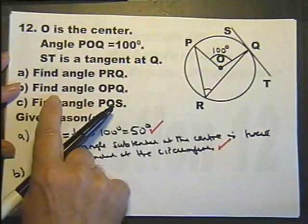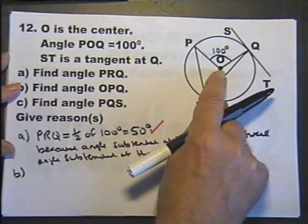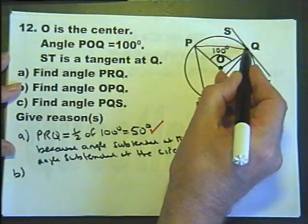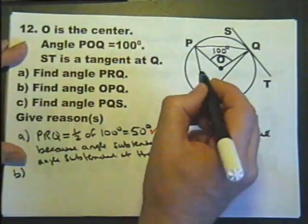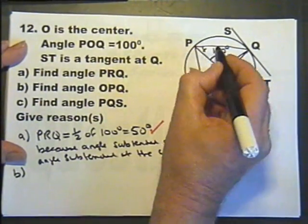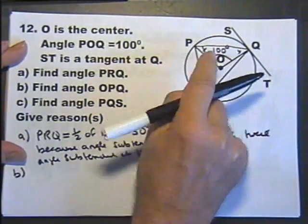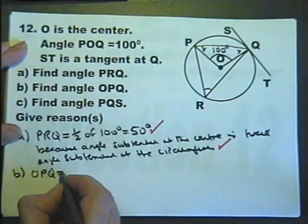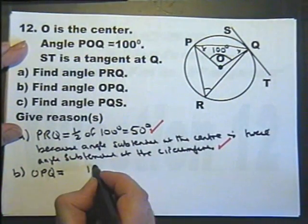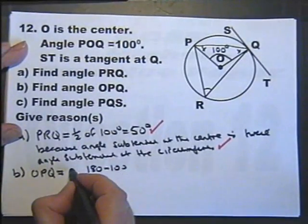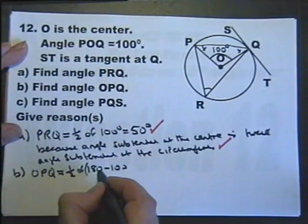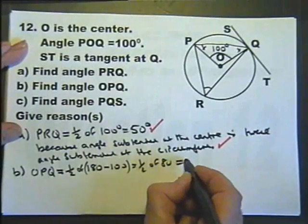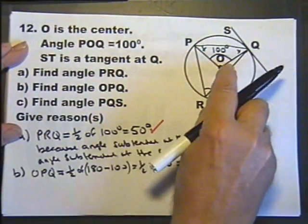Part B: find the angle OPQ. Let's draw in that chord. The examiner hasn't drawn it on the diagram, but we certainly can. This is an isosceles triangle. So OPQ equals, if that's 100, then 180 minus 100, then half it. That's half of 80, which is 40 degrees.